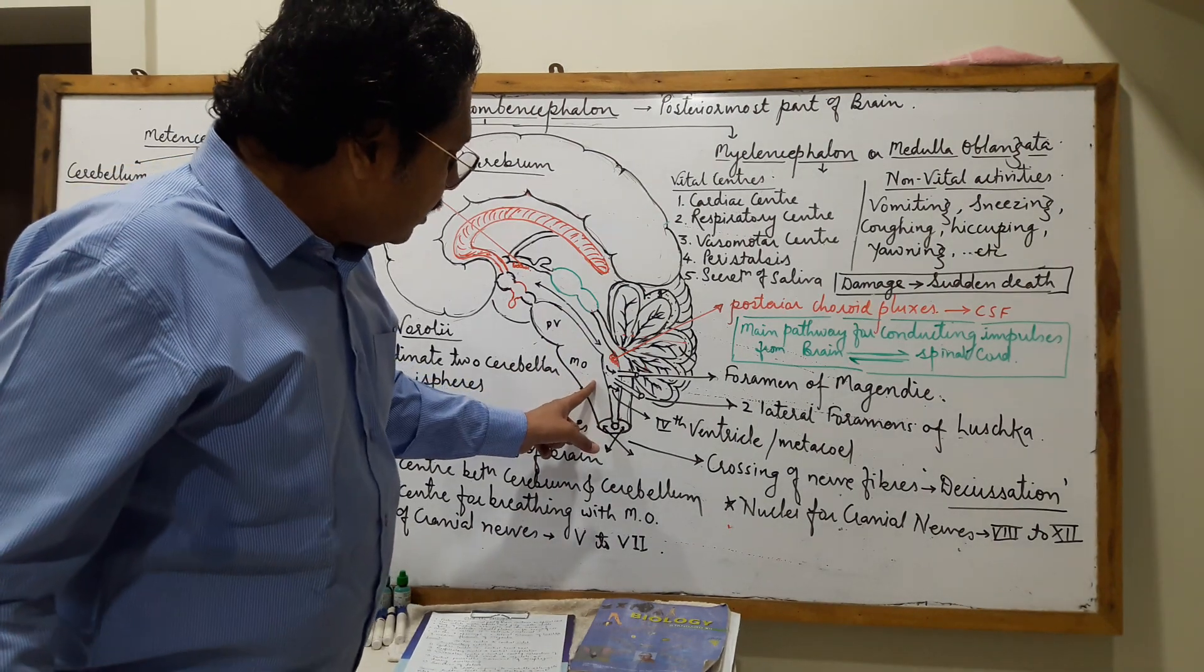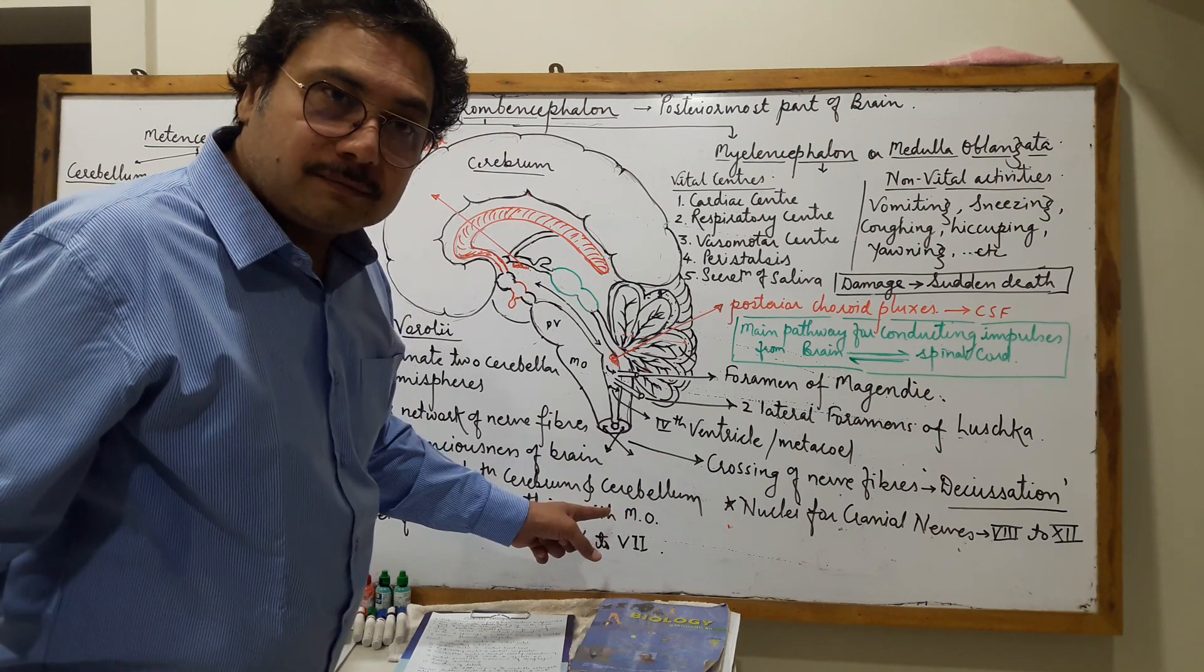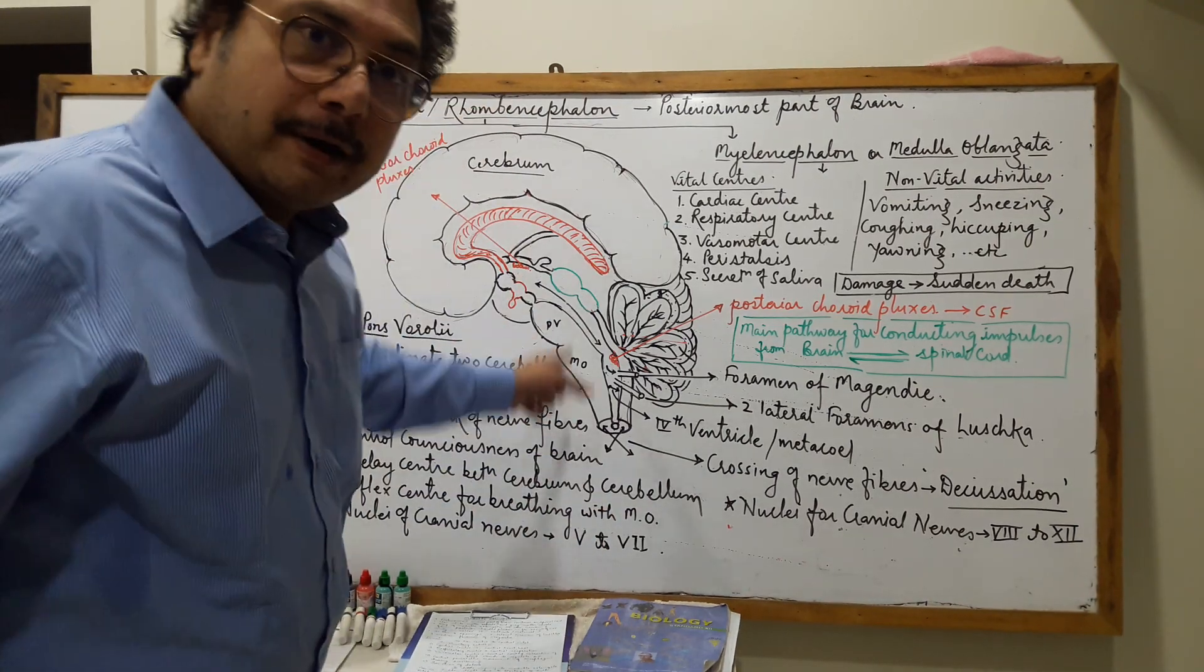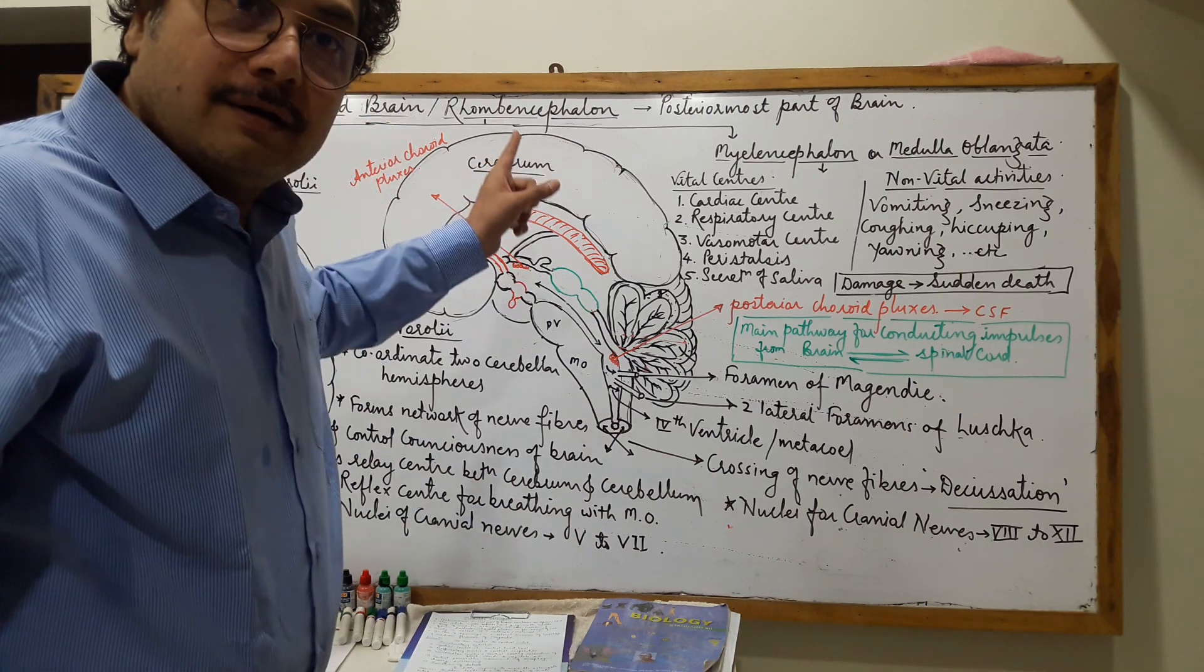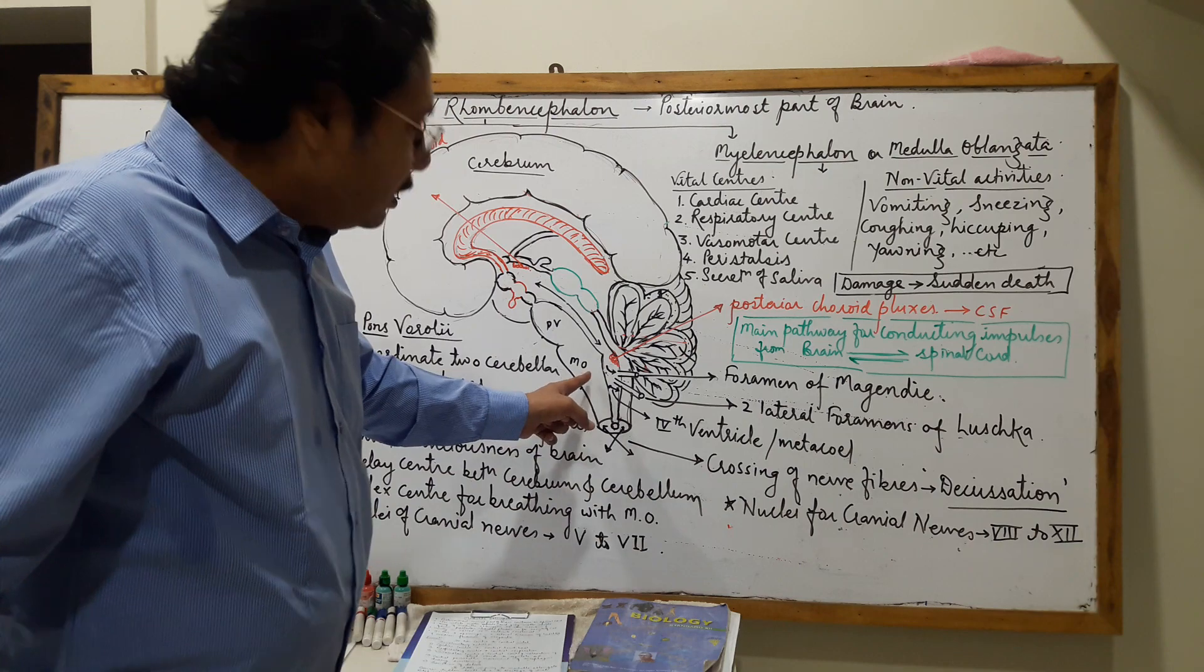The medulla oblongata continues as the spinal cord. Therefore, it carries impulses towards the brain and away from the brain—upward towards the brain and downward through this medulla oblongata.